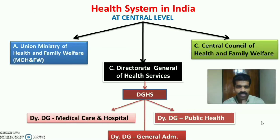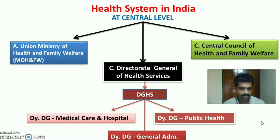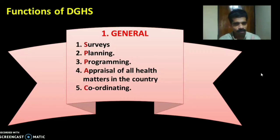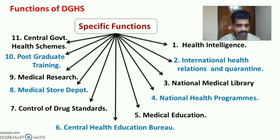Summary: At central level, India's health system has three organs — Union Ministry of Health and Family Welfare, DGHS, and Central Council of Health and Family Welfare. DGHS is headed by Director General, with three Deputy Directors General for Medical Care and Hospital, General Administration, and Public Health. Functions: General (SPPAC — Survey, Planning, Programming, Appraisal, Coordinating) and Specific (Health Intelligence, International Health Relations and Quarantine, National Medical Library, National Health Programs, Medical Education, Central Health Education Bureau, Control of Drug Standards, Medical Store Depot, Medical Research, Postgraduate Training, Central Government Health Scheme).